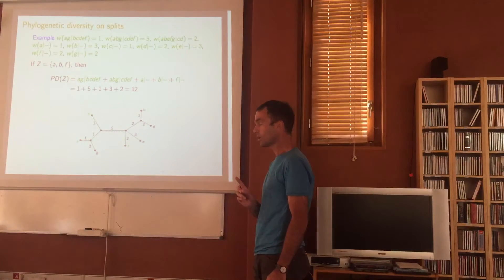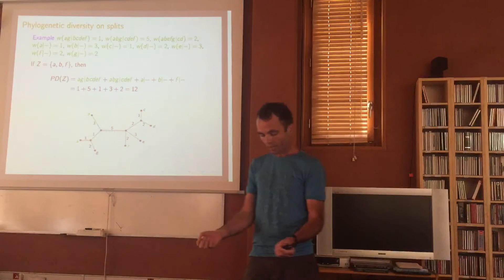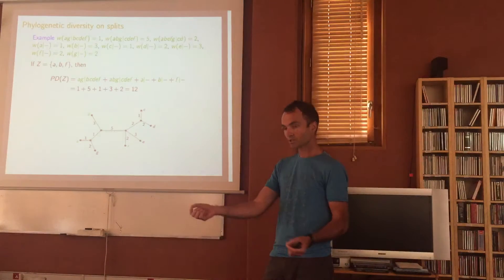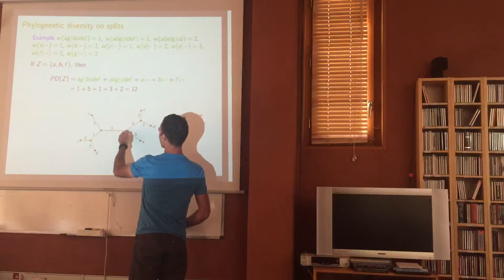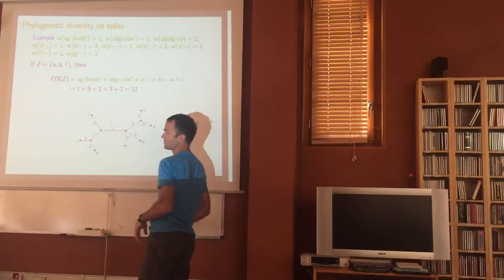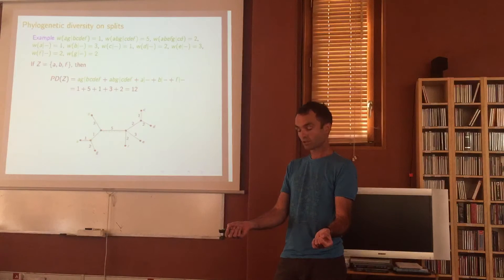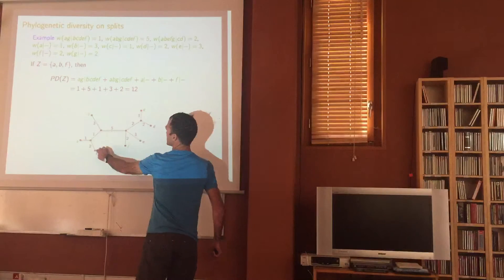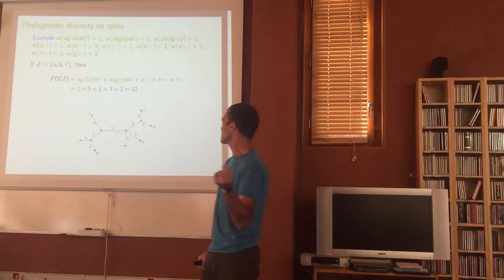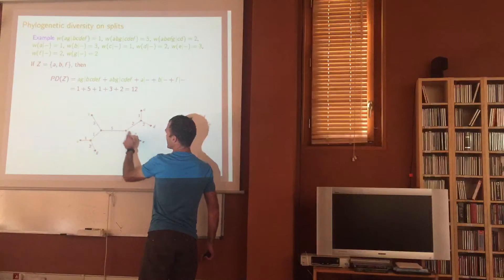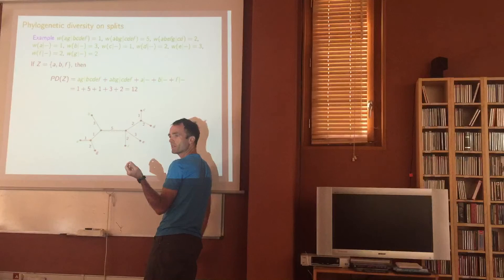I've got two more elements to add to make size four. I add the next one that gives the biggest increase — I could add B or E, so let's add E. Now I've got {G, D, E} and want one more. I add the next one that gives the biggest increase and add B. Is that optimal? The answer is yes — you can always do that, and do it very quickly.